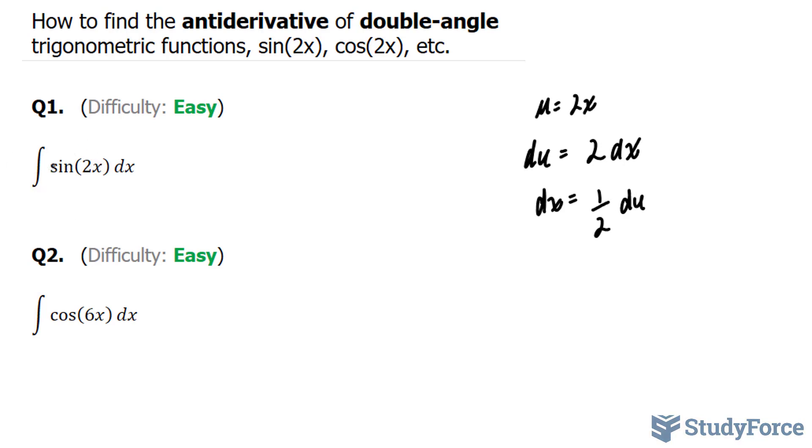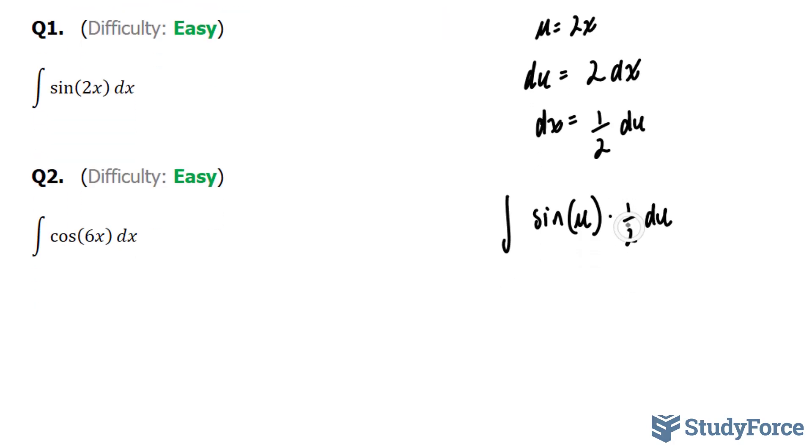The next step is to rewrite this in terms of u and du, where we have sine u times half du. I'm going to pull out this half. I end up with 1 over 2 on the outside.